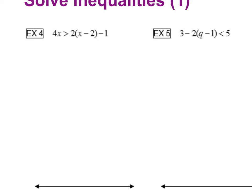Example 4 from your note packet – see the parentheses? Start with that distributing. So we have 4x is greater than 2 times x is 2x, 2 times a negative 2 is negative 2, minus 1. Go ahead and combine those like terms. 4x is greater than 2x minus 3.